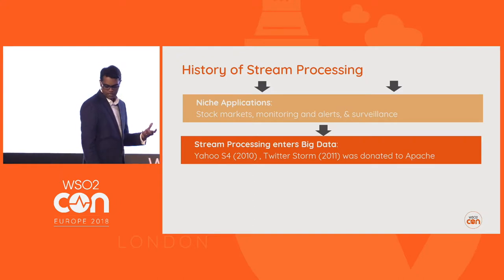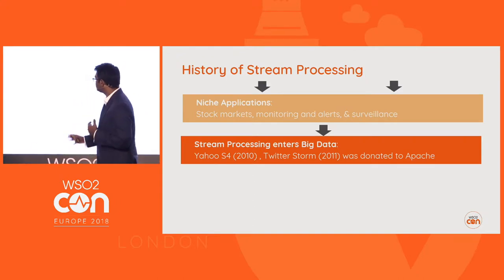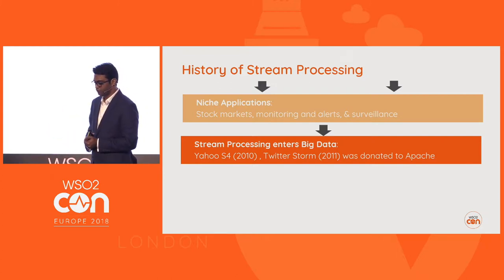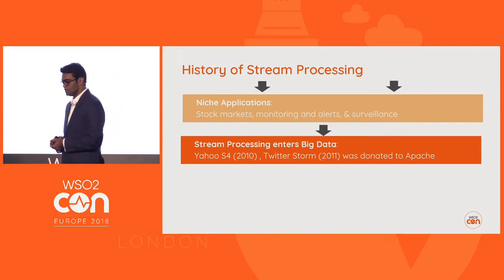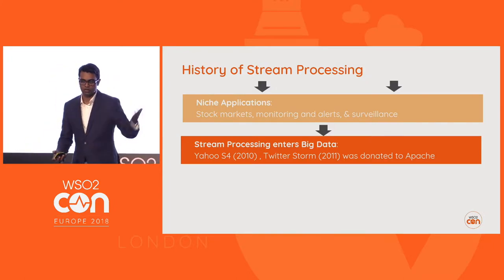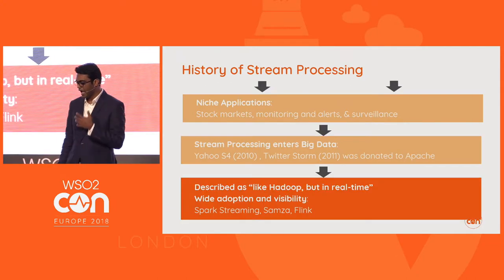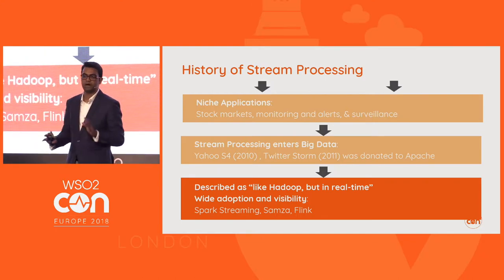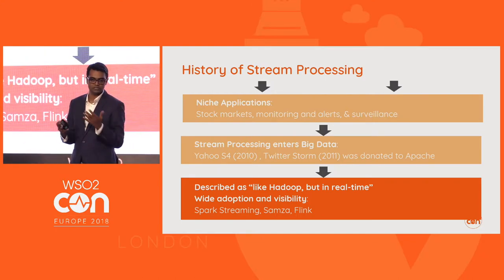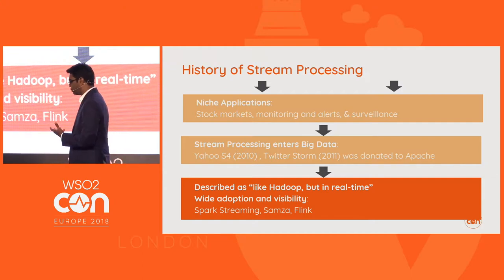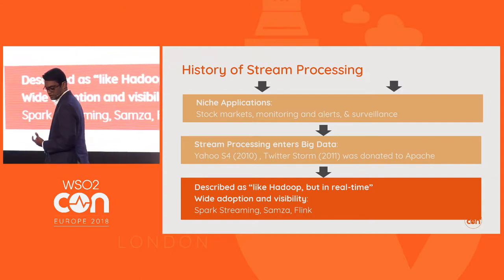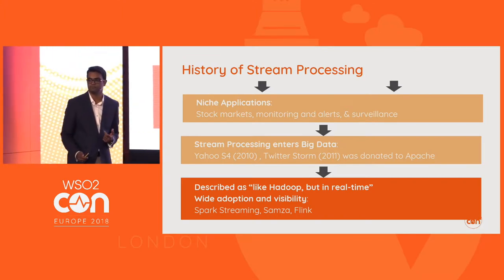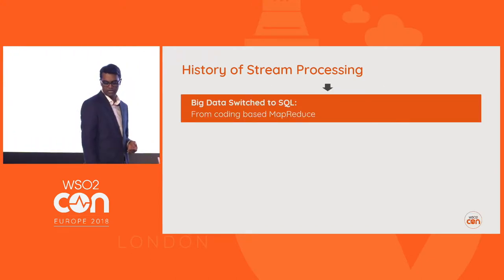Around 2010, these technologies entered the big data world. Yahoo invented S4, Twitter created Storm, and both were donated to Apache. In the big data world, the message was: 'This is Hadoop, but in real time.' That helped achieve wide adaptation. Along with this, Spark, Samza, and Flink also emerged as processing systems.